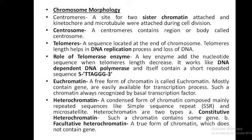Moving to chromosomal morphology. First, centromere — a site where two sister chromatids are attached and kinetochore microtubules attach during cell division. Centrosome — a centromere-containing region or body called centrosome. Telomere — a sequence located at the end of chromosomes. Telomere length helps in the DNA replication process, and there is loss of telomere length during DNA replication.